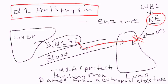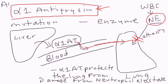Alpha-1 antitrypsin deficiency means you are deficient in this enzyme. This occurs because it is an autosomal recessive disorder — there is a mutation in the gene that codes for alpha-1 antitrypsin. As a result, people who have this disorder are deficient in the enzyme.